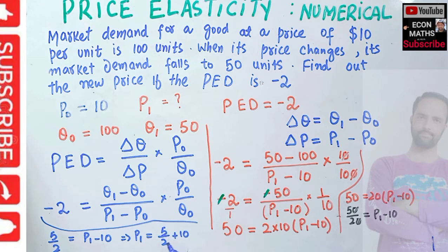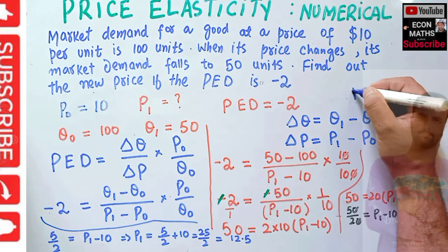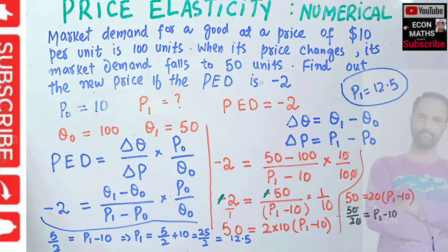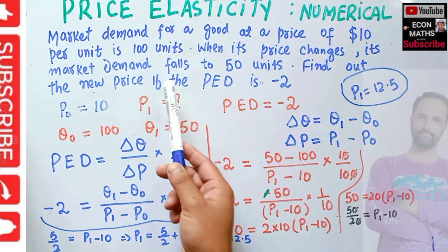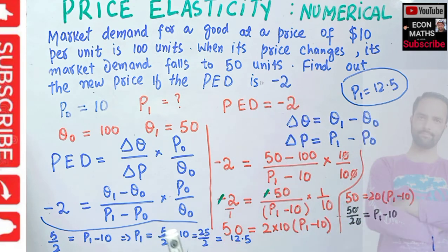5 upon 2 plus 10 equals 25 upon 2, which equals 12.5. So P1 equals $12.5. When market demand has fallen to 50 units and price elasticity of demand is minus 2, the new price will be $12.5. I hope I made myself clear in this video, thank you.